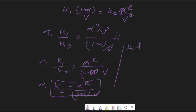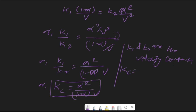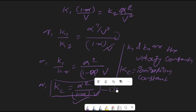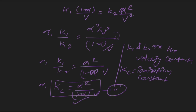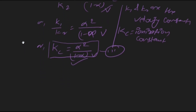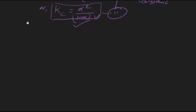Here K1 and K2 are the velocity constants, and Kc is the ionization constant, also called the dissociation constant. This equation number 3 is the required formula for Oswald's dilution law. In an examination, if the question is to derive the expression for Oswald's dilution law, you need to derive up to this equation number 3.